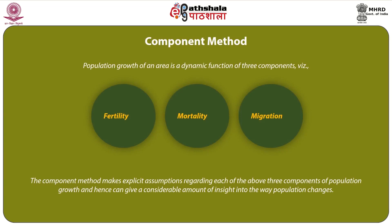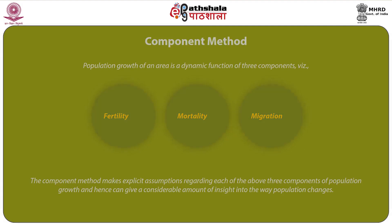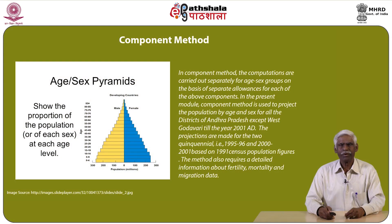Population growth of an area is a dynamic function of 3 components — usually the vital rates like fertility, mortality and migration. The component method makes explicit assumptions regarding each of these 3 components of population growth and hence can give a considerable amount of insight into the way population changes over a period of time. In the component method, computations are carried out separately for age-sex groups on the basis of separate allowances for each of the above components.